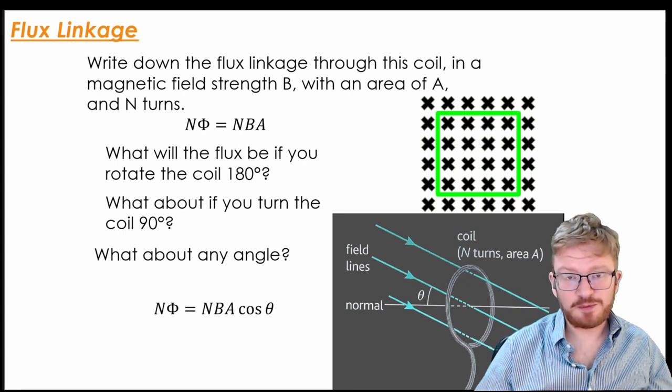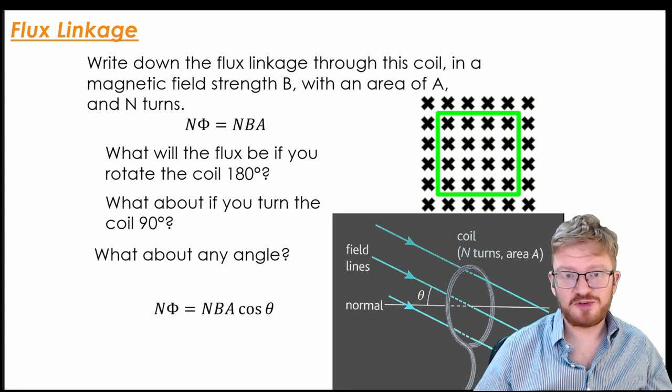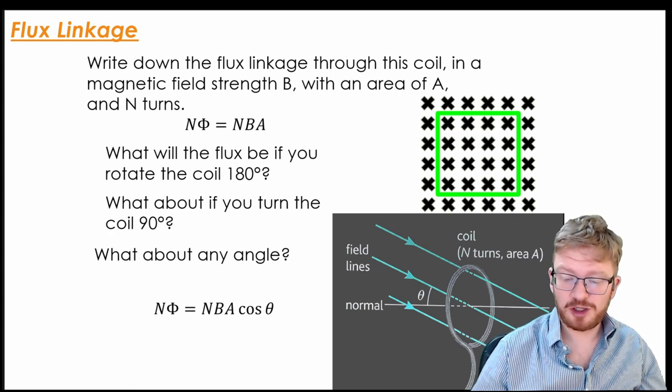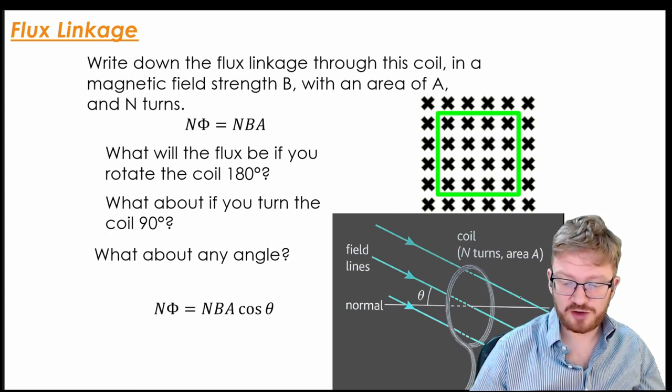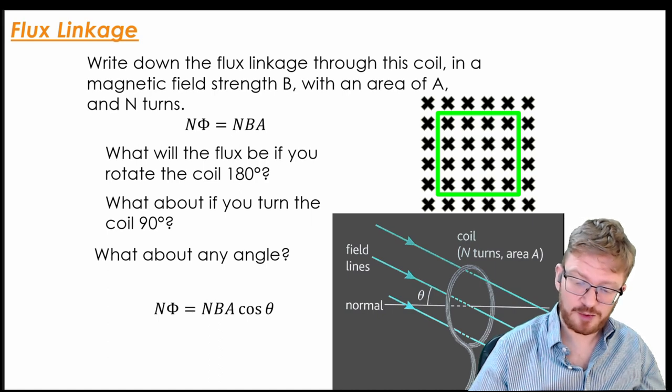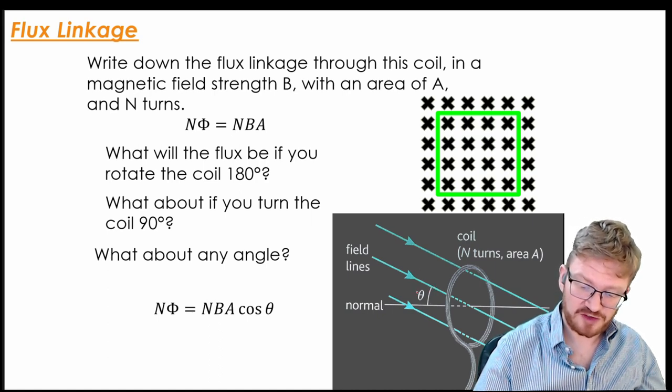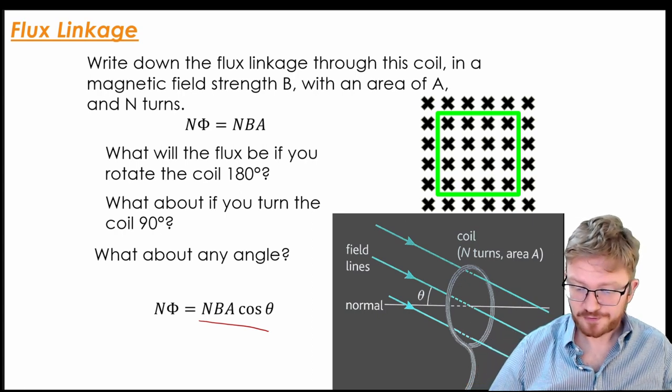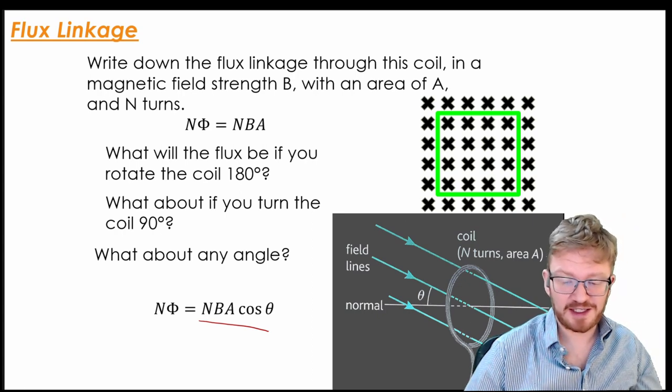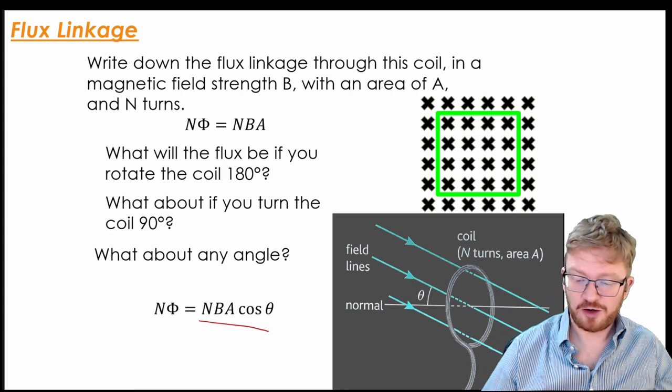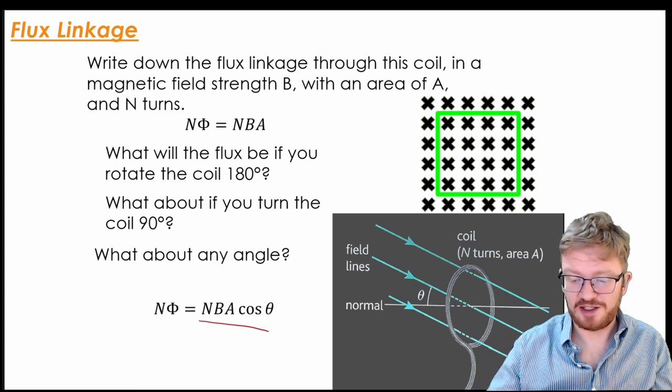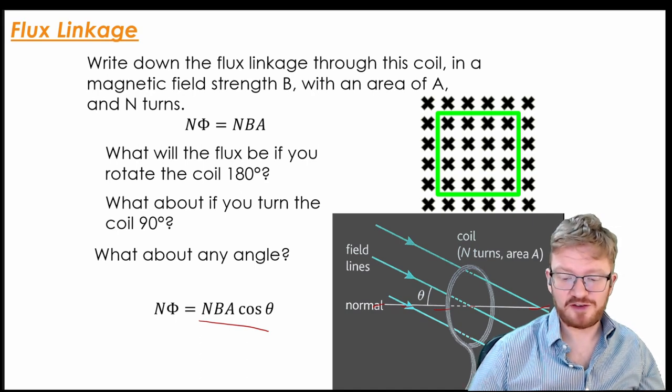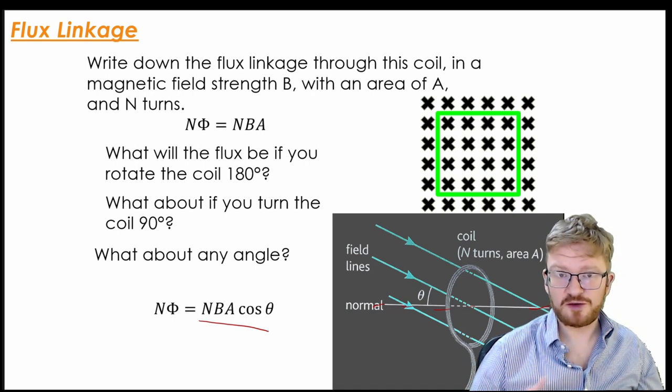Now, as I said before, we're going to assume for most purposes that this is always perpendicular to the coil. But if it's ever not perpendicular, you can just look at it like this, and you can see straight away, well, just resolve your forces. This is theta, so I can say flux linkage, magnetic flux linkage is NBA times the cosine of the angle between the center of the coil and the field lines. I hope that makes sense to you.